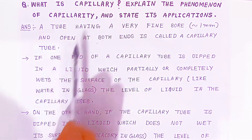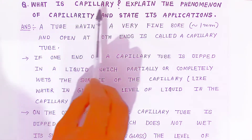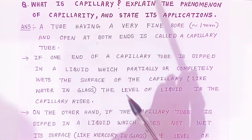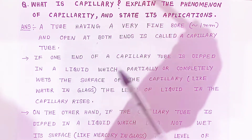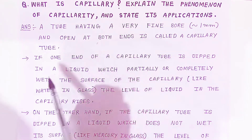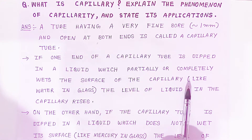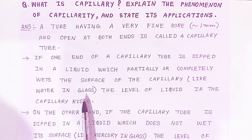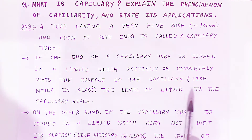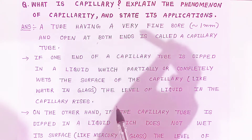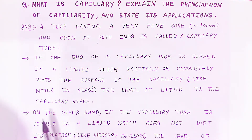If one end of a capillary tube is dipped inside a liquid which partially or completely wets the surface of the capillary — like water in glass — the level of liquid in the capillary rises. On the other hand, if the capillary tube is dipped in a liquid which does not wet the surface — like mercury in glass — the level of mercury in the capillary drops.